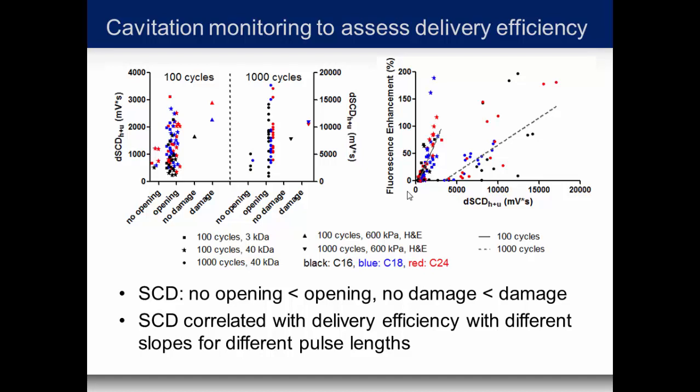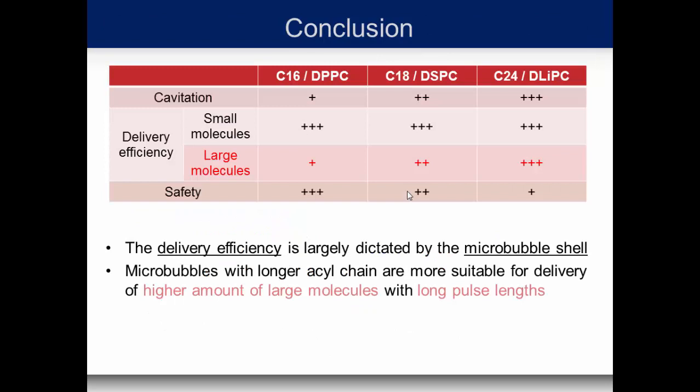To summarize with this table: cavitation increases with shell chain length. For delivery efficiency, small molecules show no difference with shell type, but for larger molecules the thicker shell produces higher delivery efficiency. Unfortunately safety follows the opposite trend — we have much higher safety with C16 relative to C24. We are currently looking at lower pressures and reversibility of the effect. I want to thank my lab, the funding sources, and of course you for your attention.